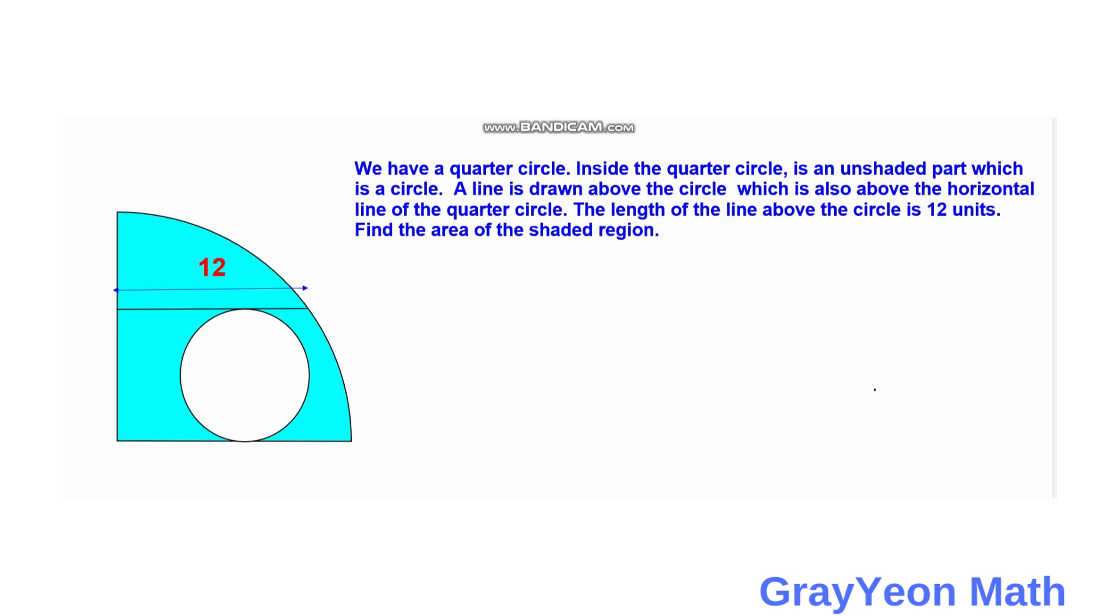Welcome to GrayonMath. We are asked to solve this problem. We have a quarter circle. Inside the quarter circle is an unshaded part, which is a circle. A line is drawn above the circle, which is also above the horizontal line of the quarter circle. The length of the line above the circle is 12 units. Find the area of the unshaded region.